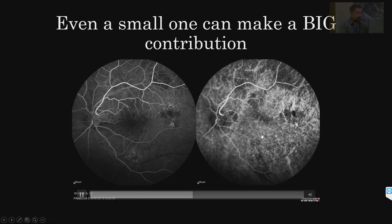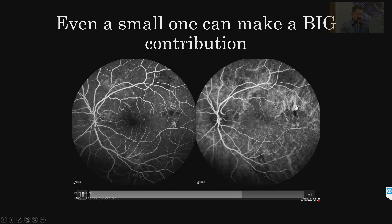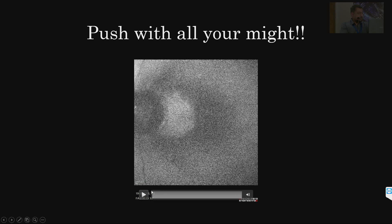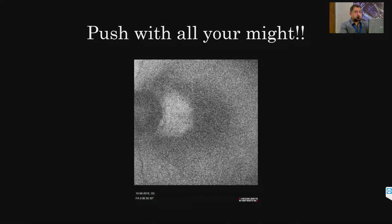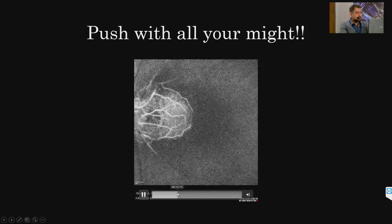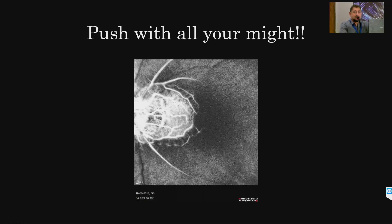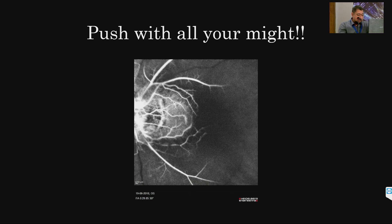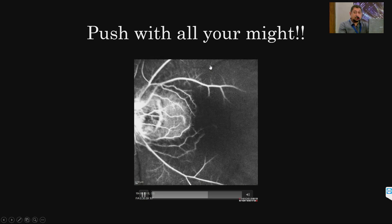Some interesting angiographic pictures: a pulsatile hyperpermeable area across the whole posterior pole. In one particularly interesting patient with severe ischemia, you can see a small vessel pushing trying to push blood into the circulation for about 30 seconds, with the blood column slowly increasing — this is the beauty of dynamic angiography.